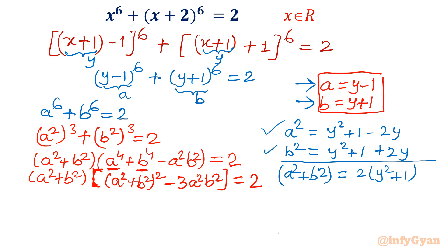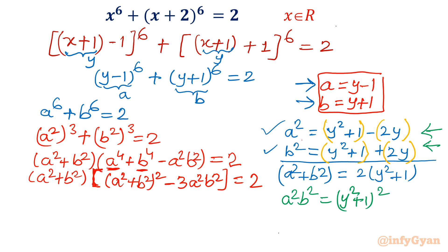Using the difference of squares formula: (a²)(b²) = (y²+1+2y)(y²+1-2y) = (y²+1)² - (2y)² = (y²+1)² - 4y².